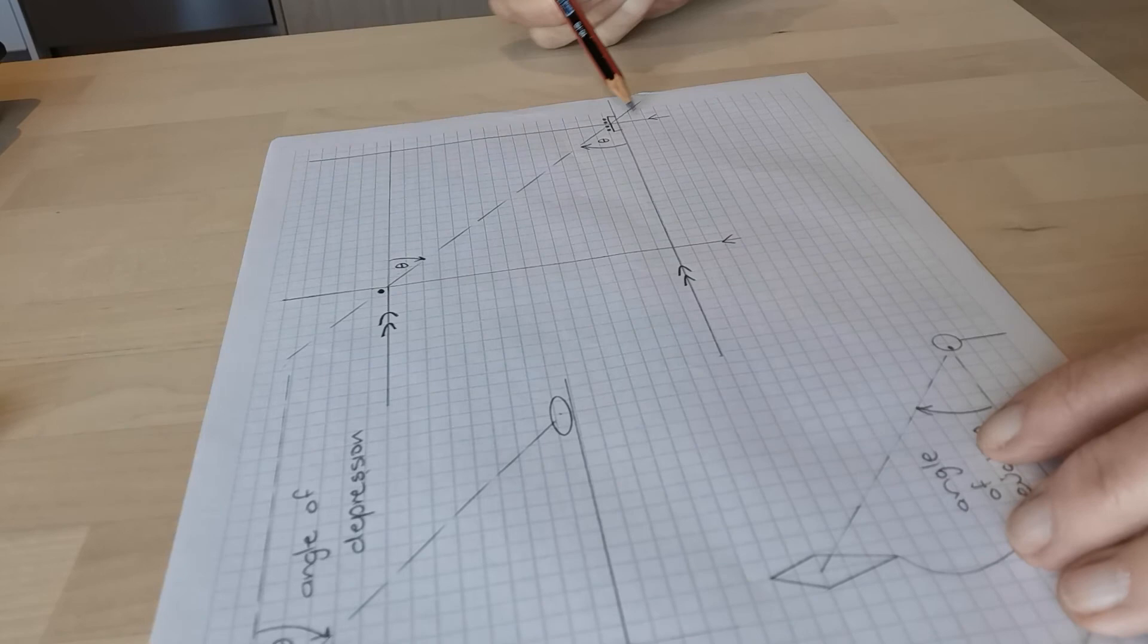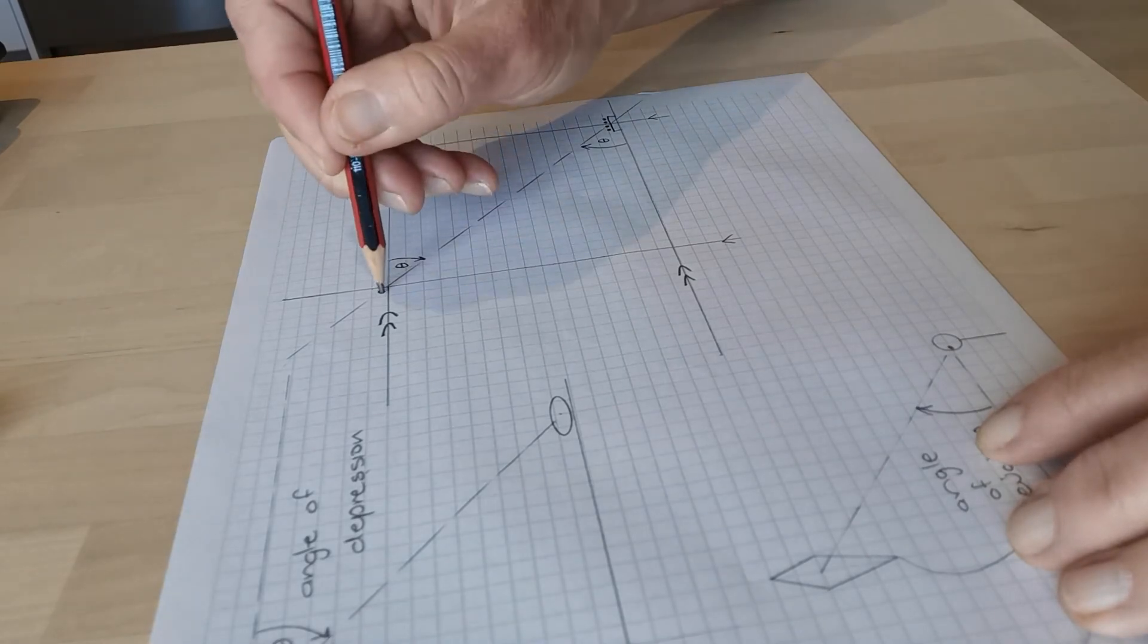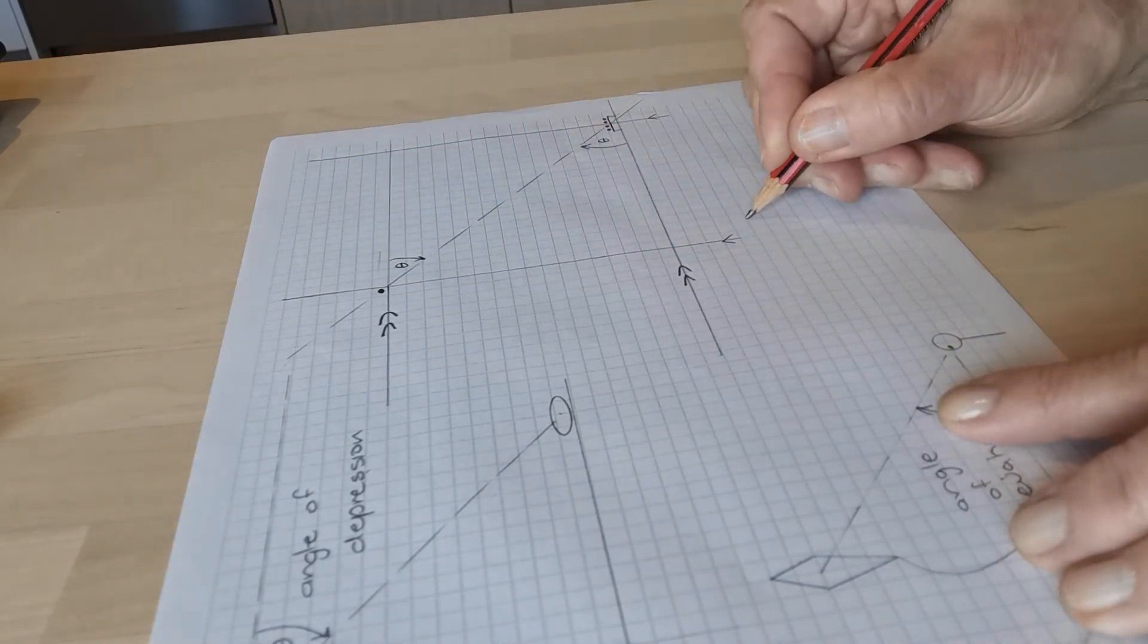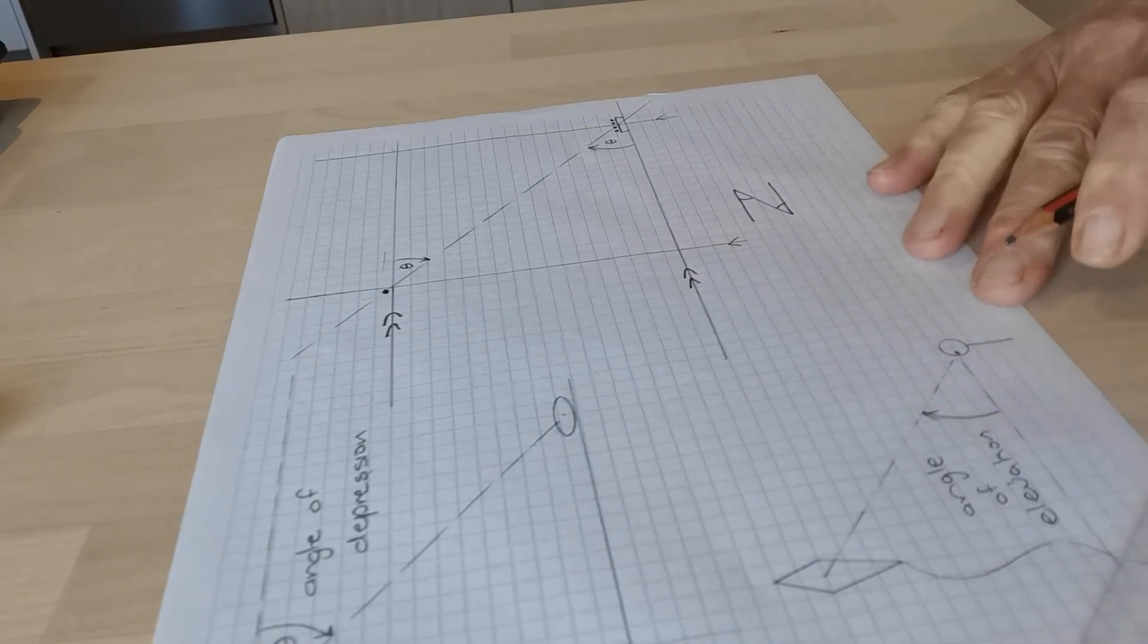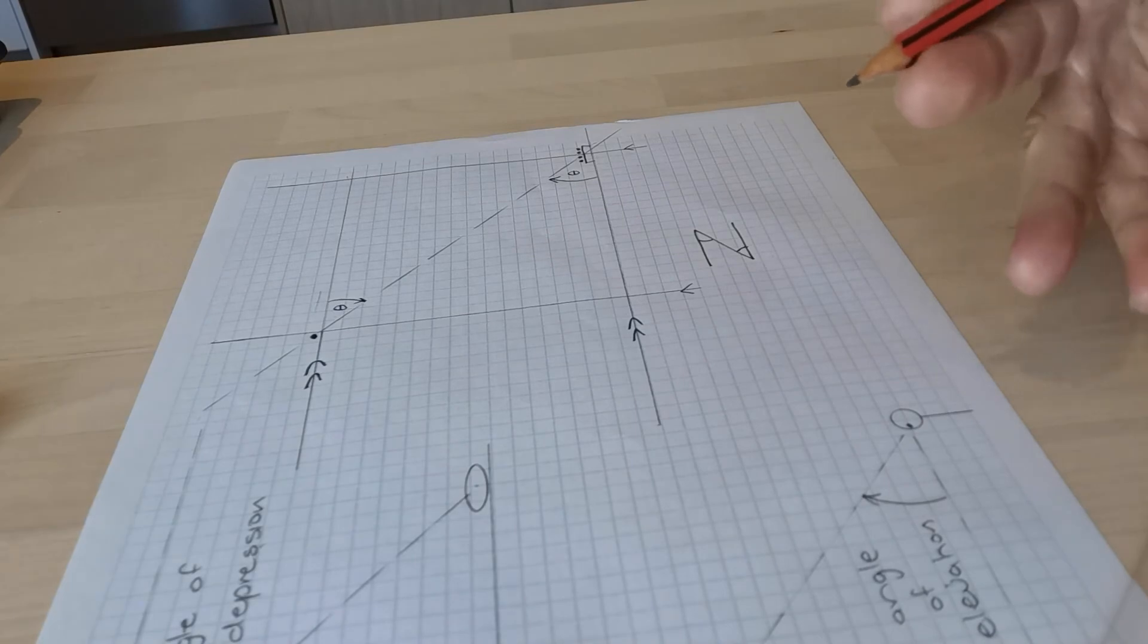So you have a transversal and you have a z-angle here. So the z-angles as you might remember between parallel lines are called alternate angles.